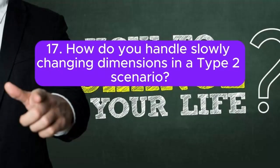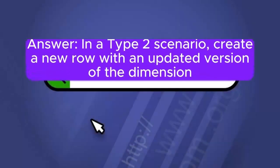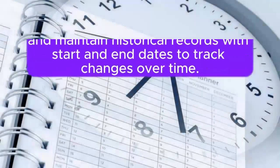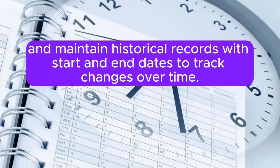Question 17: How do you handle slowly changing dimensions in a type 2 scenario? Answer: In a type 2 scenario, create a new row with an updated version of the dimension and maintain historical records with start and end dates to track changes over time.